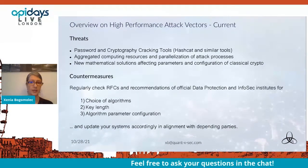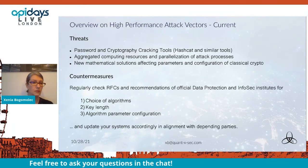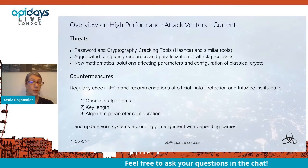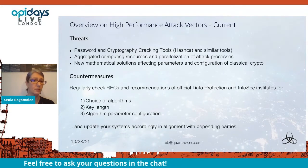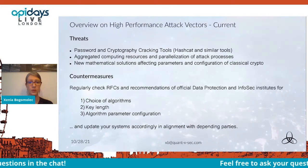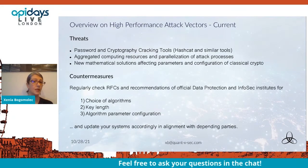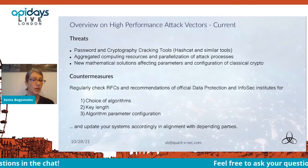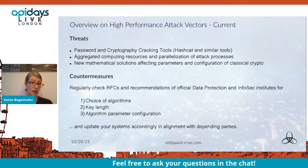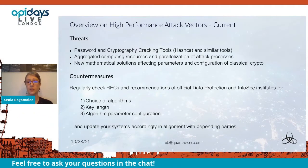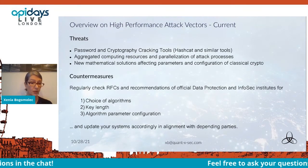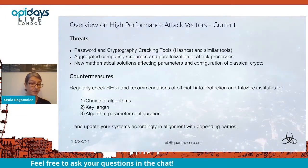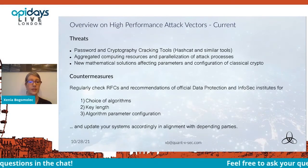Looking more closely at high-performance attack vectors currently available: password and cryptographic cracking tools like Hashcat are open source and available to anyone; aggregated computing resources and parallelization of attack processes; and new mathematical solutions affecting parameters and configuration of classical cryptography. Countermeasures include regularly checking RFCs and recommendations from official data protection and infosec institutes for algorithm choice, key length, and parameter configuration, then updating your systems accordingly.